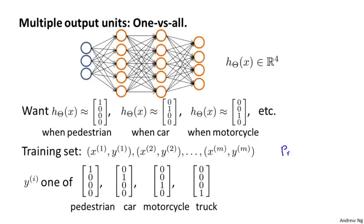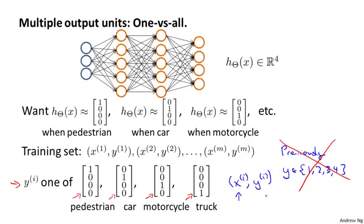what we're going to do in this example is that, whereas previously we had written out the labels as y being an integer from one, two, three, or four, instead of representing y this way, we're going to represent y as follows. Namely, yi will be either 1,0,0,0 or 0,1,0,0 or 0,0,1,0 or 0,0,0,1, depending on what the corresponding image xi is. And so one training example will be one pair xi comma yi, where xi is an image with one of the four objects, and yi will be one of these vectors.